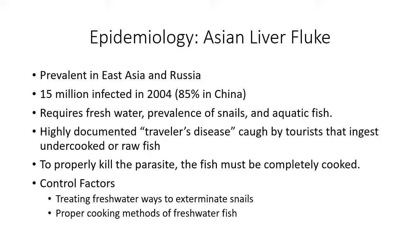Even though the Asian liver fluke has a smaller geographic distribution, it is still quite large and prominent in East Asia and Russia. In fact, 15 million people were infected as of 2004. It requires fresh water, snails, and the intermediate host of fish. It is a common traveler's disease where tourists visit East Asian countries, sample local cuisine, and contract the parasite by happenstance. Control measures include completely cooking the fish, and also treating fresh waterways to exterminate the snails — which stops the life cycle from reoccurring.